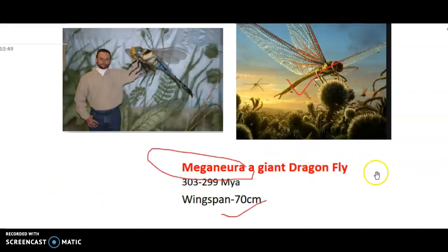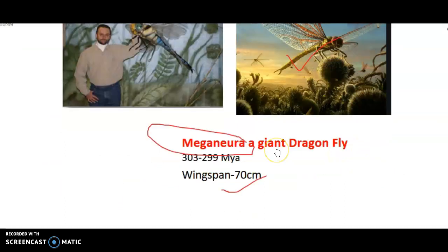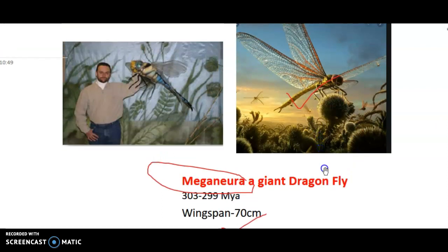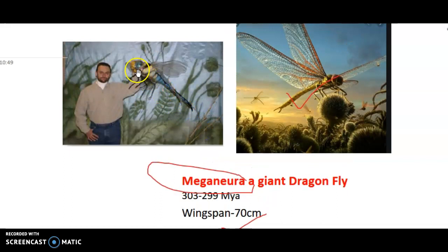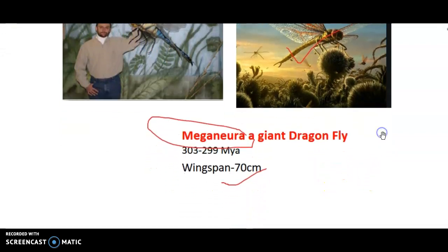Now let's talk about some major life forms of the Carboniferous period. Meganeura was a giant dragonfly — a huge insect with a wingspan of 70 centimeters. You can see its size compared to a modern man — a classic example of what high levels of oxygen could do to an insect.